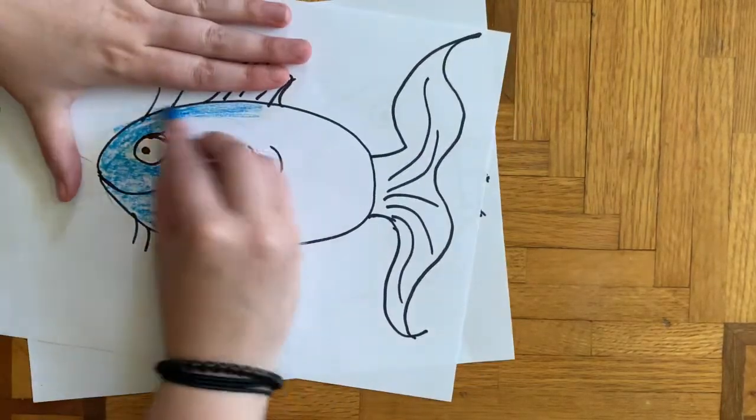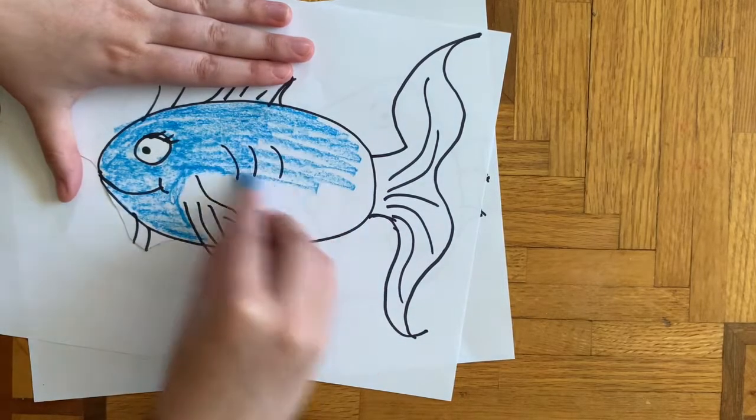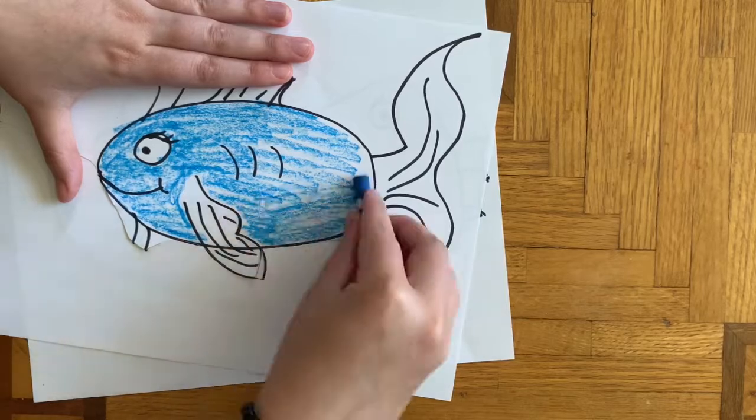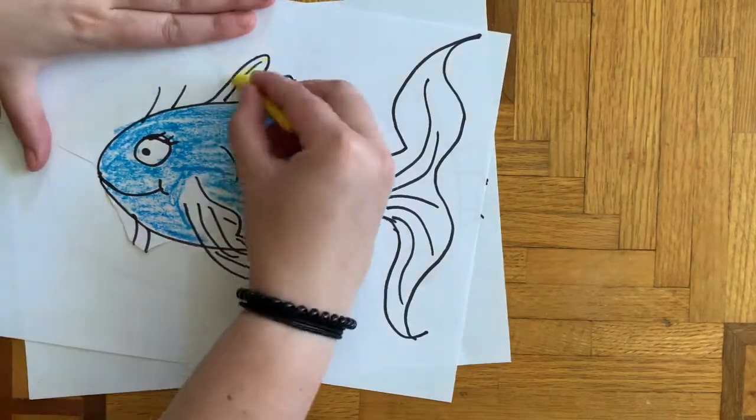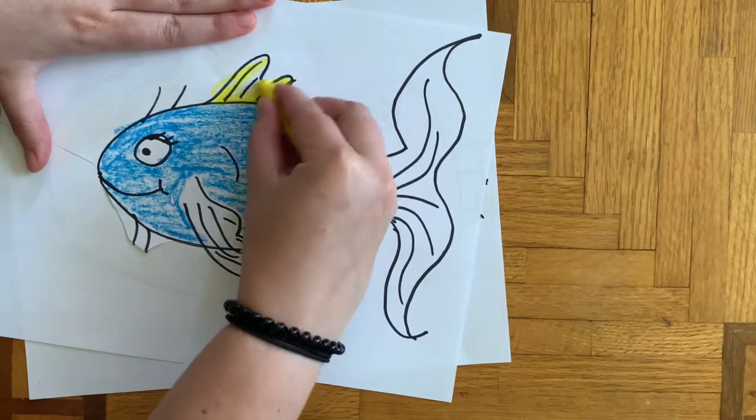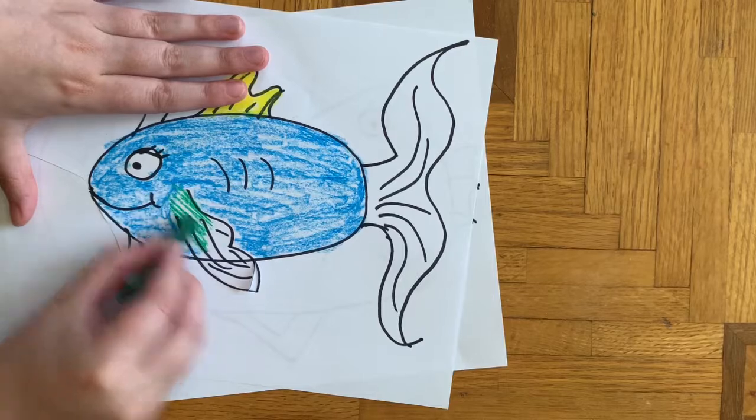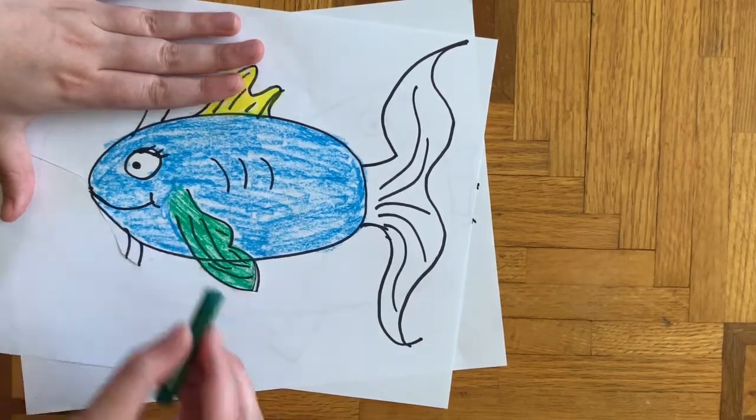Take some time to color in your fish whatever color you would like. I chose to color my fish blue and then I chose to create the fins in different colors as you'll see in a moment. The top fin I chose to make yellow, the bottom fin is green, and the back fin is red, but you can choose anything you would like.